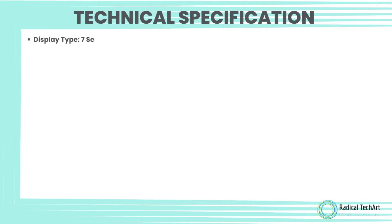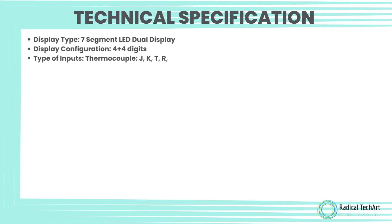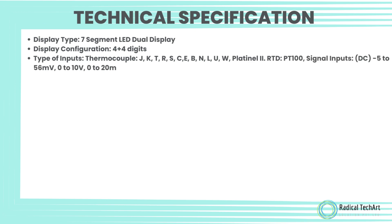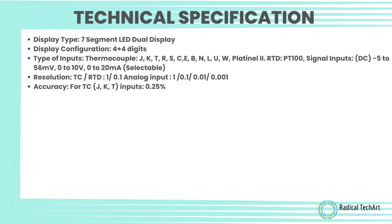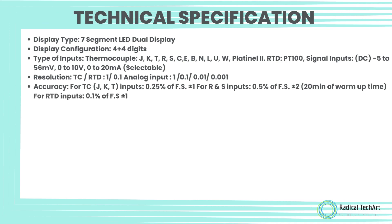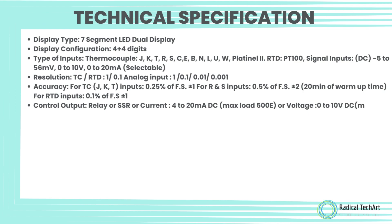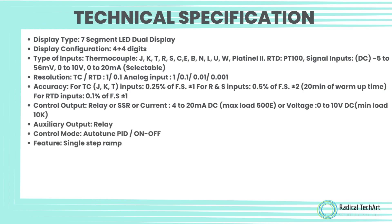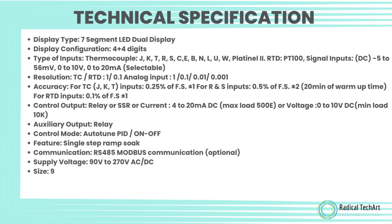Technical Specifications: Display type is 7-segment LED dual display, display configuration is 4+4 digits. Type of inputs: Thermocouple types J, K, T, R, S, C, E, B, N, L, U, W, Platine L2; RTD PT100; signal inputs DC: -5 to 56 mV, 0 to 10 V, 0 to 20 mA — all selectable.